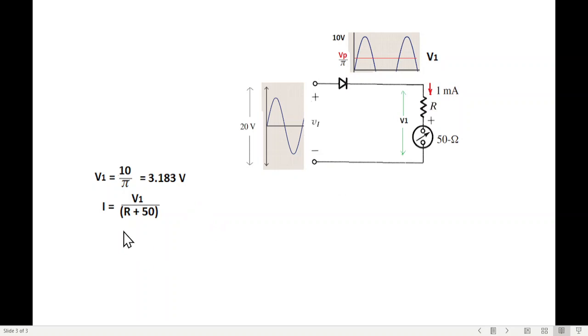And the current formula now we can apply I is equal to V over R. So I is equal to V1 over R plus 50.